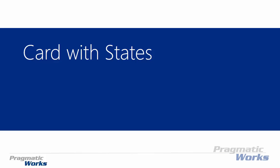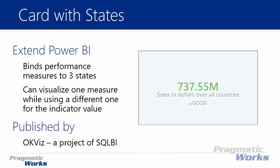Welcome back. In this session we're going to be looking at the Card with States. It's really based off of the traditional Power BI built-in card, but it gives you additional features you can't do with a traditional card. It almost has a combination of a card and a KPI in one — you can bind different performance measures and through three different states, whether positive, negative, or an in-between medium state, identify whether that metric is meeting your requirements.